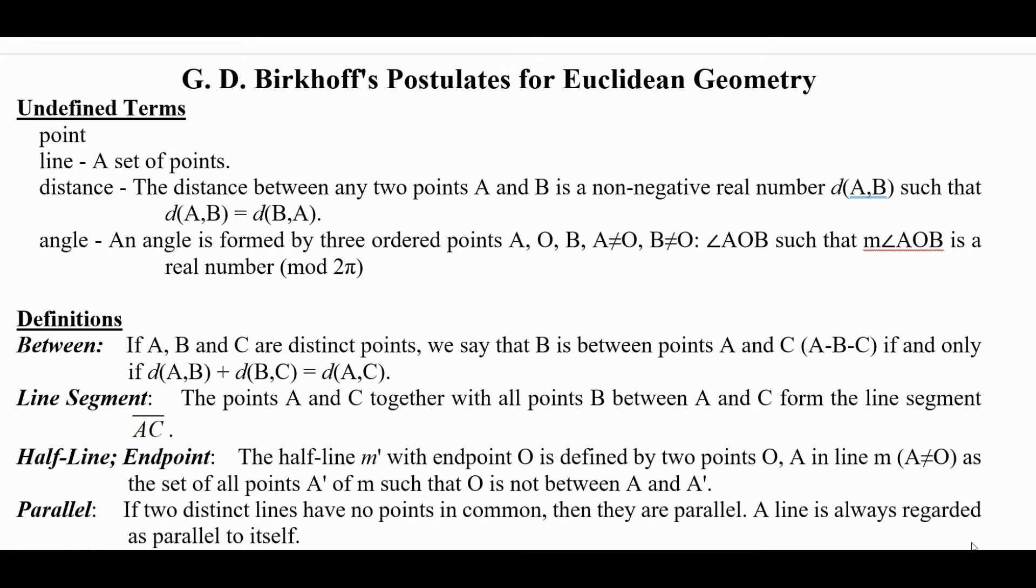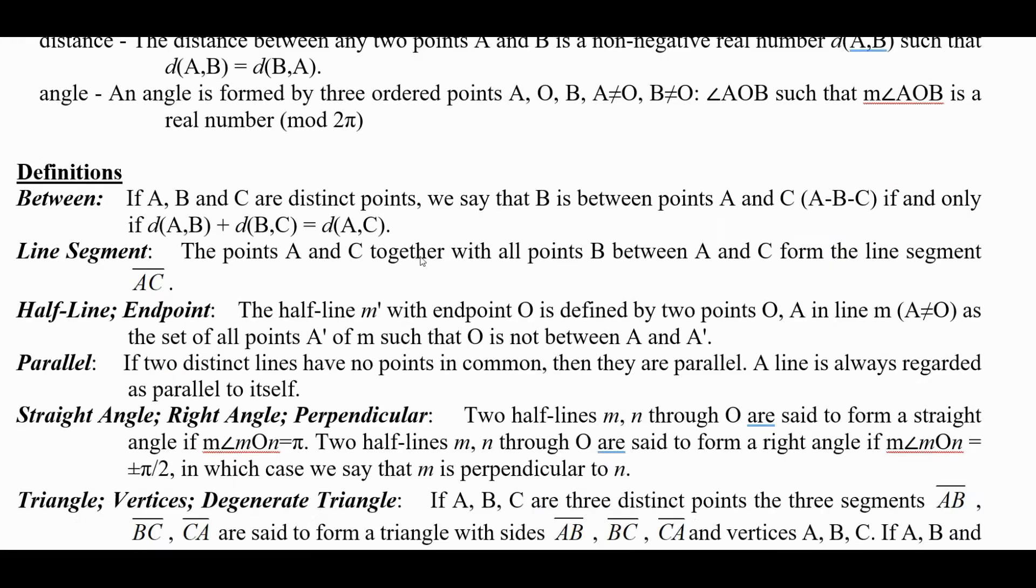And an angle is formed by three ordered points A-O-B, A not equal to O, B not equal to O, such that angle AOB, such that the measure of angle AOB is a real number modulo 2π. So he's basically postulating that there is an angle measure and a distance measure in existence.